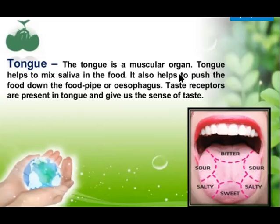Along with the tooth, the tongue is also present in the mouth. The tongue is a muscular organ. It helps to mix saliva with the food. The mouth is connected with the stomach by a long tube which is known as the oesophagus or food pipe. The tongue pushes food into that tube and helps in swallowing it, making the food soft and easy to swallow.